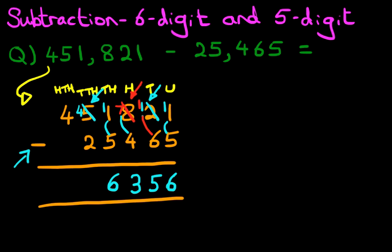Now we're going to move on to the ten thousands. What is 4 minus 2? 4 minus 2 is 2. And lastly, the hundred thousands column, we have a 4. 4 minus nothing is 4.